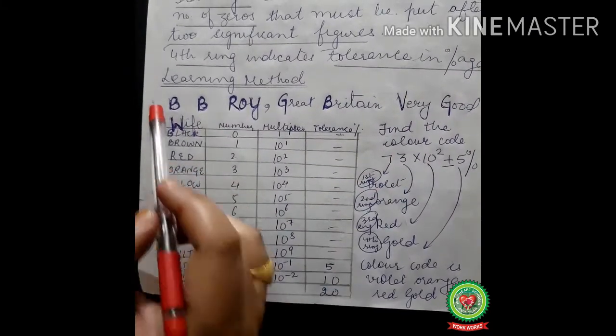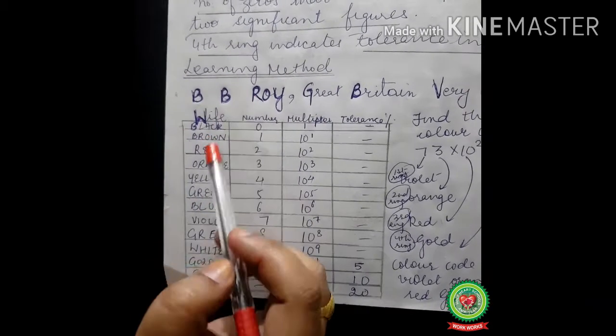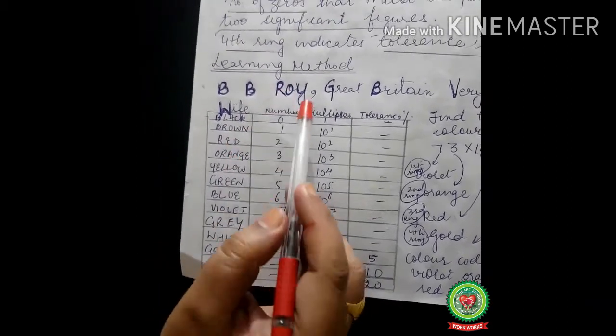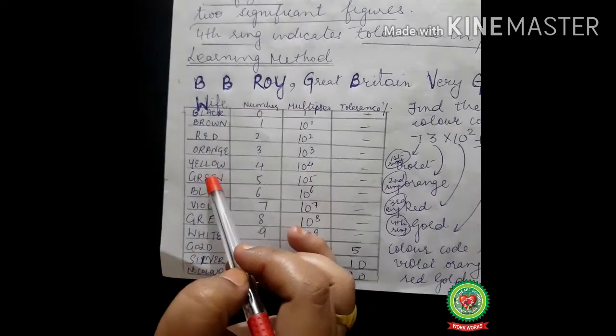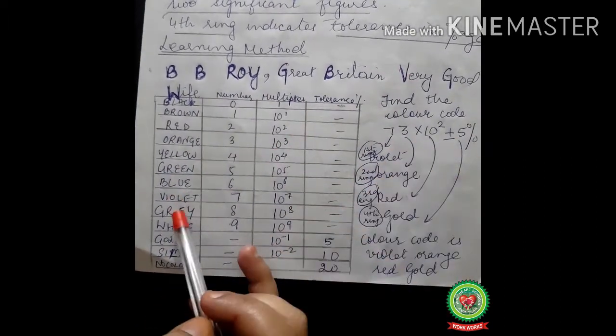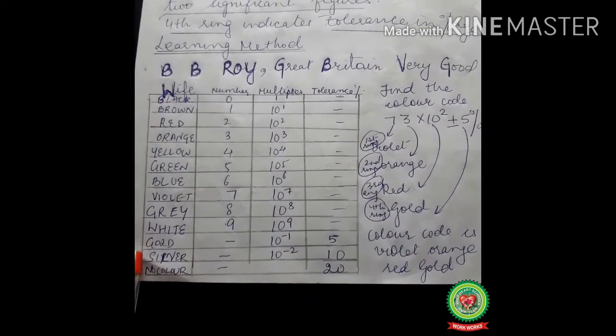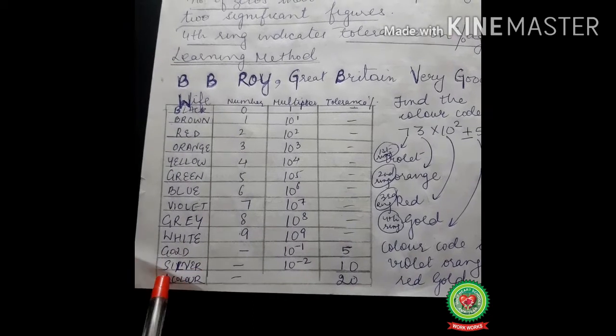Now B here is brown, then comes R red, then O is orange, Y is yellow, G is green, B is again blue, then V is violet, then G is gray, then W here is white.